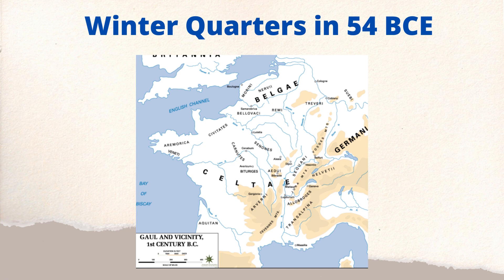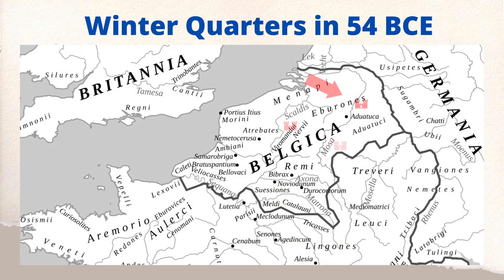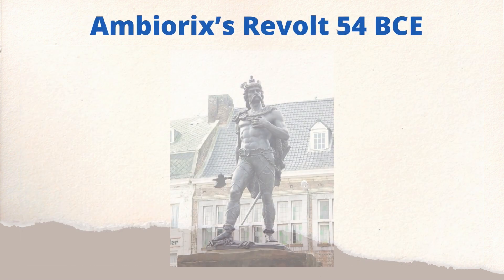In the winter of 54 BCE, Caesar runs into a problem. Typically Roman armies would winter in camps with food and resources coming from neighboring allies. The problem this year was a drought, which Caesar mentions, leading to a smaller harvest. There wasn't enough food in any region to sustain his legions, so he wasn't able to put his entire army in one place. Instead, he had to spread his army out across a much larger area to ease pressure on local areas to provide food.